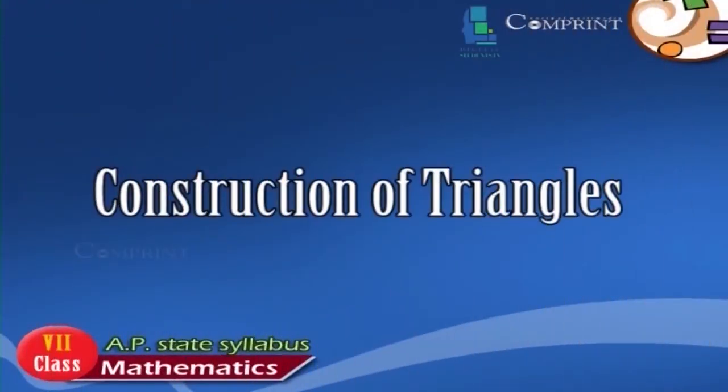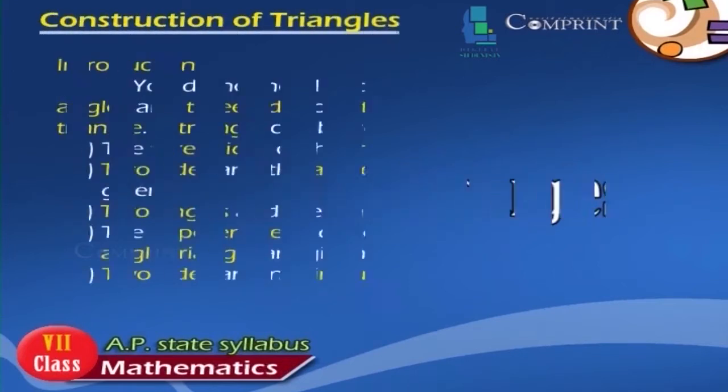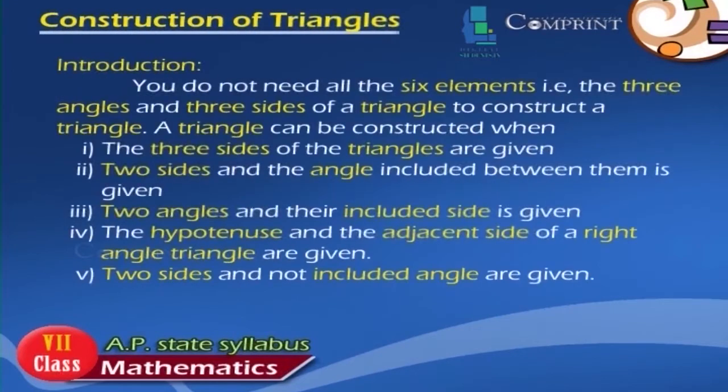Construction of Triangles. Introduction: You do not need all 6 elements, i.e., the 3 angles and 3 sides of a triangle, to construct a triangle.